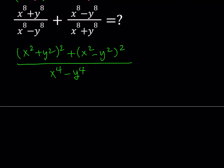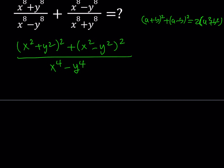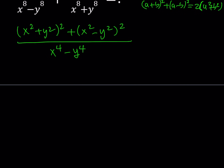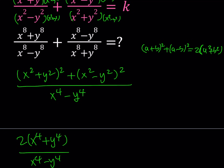If you expand this expression, you know that (a + b)² + (a - b)² always equals 2(a² + b²), because the 2ab terms cancel out. So from the numerator we get 2(x⁴ + y⁴), and at the bottom we have x⁴ - y⁴. Something similar is going to happen later as well.